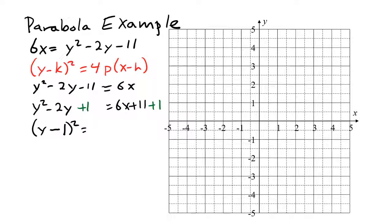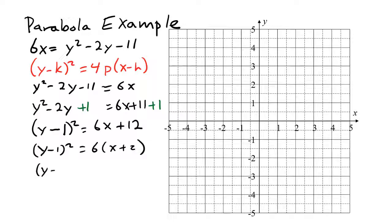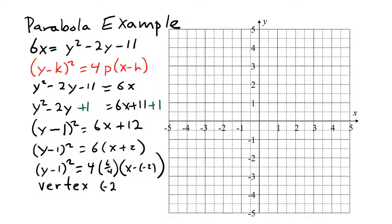The left side becomes y minus 1, the quantity squared. On the right we have 6x plus 12, and we factor out the coefficient 6, giving 6 times the quantity x plus 2. To match standard form, we write 6 as 4 times 6/4, and rewrite x plus 2 as x minus negative 2. This gives us a vertex at (-2, 1), and p equals 6/4, which reduces to 3/2, or 1.5.